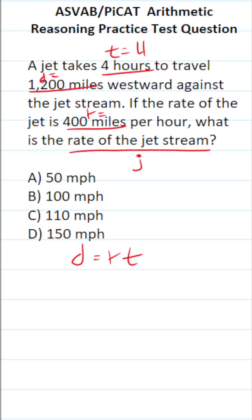The jet stream is like a river in the sky. Jets that fly against the jet stream slow down, and jets that fly with the jet stream speed up. Let's think about how to modify the distance formula.